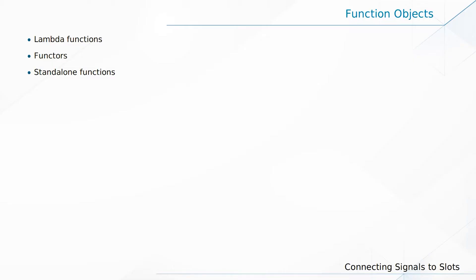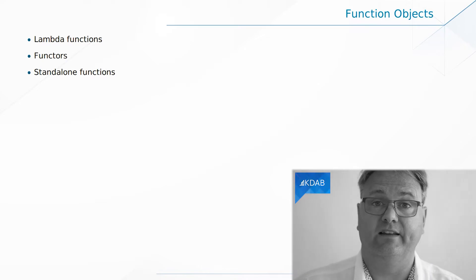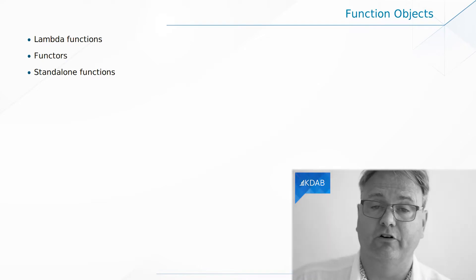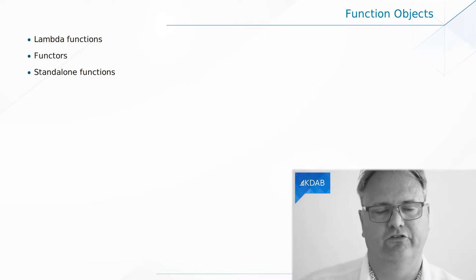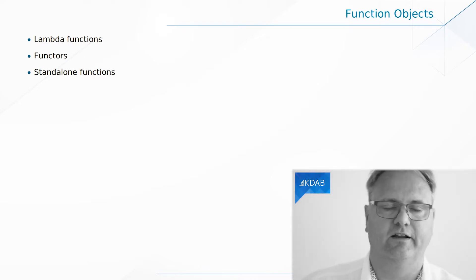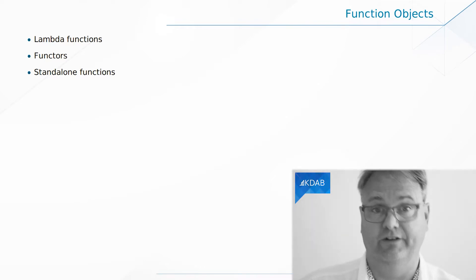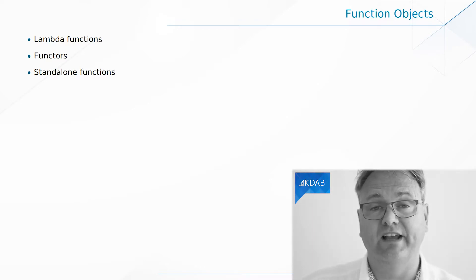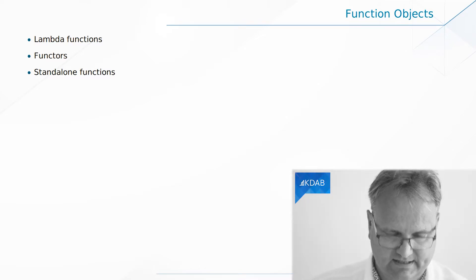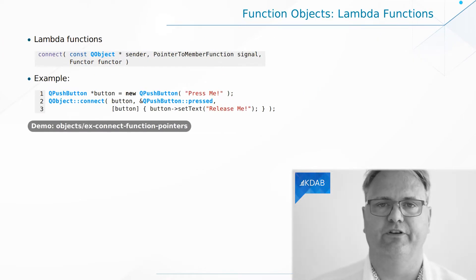There are three different ways that we can connect our signals using function objects. We can do that to lambda functions as I just said. We can do that using functors — do you even know what a functor is? And we can use that with standard functions. Let's see the code for this.